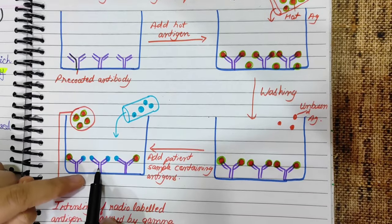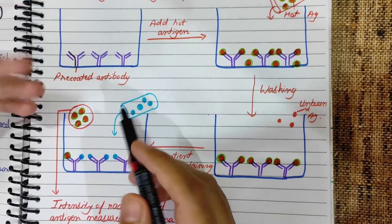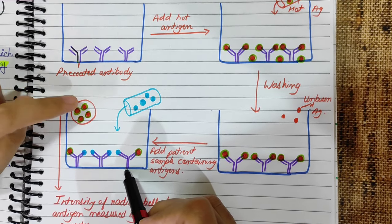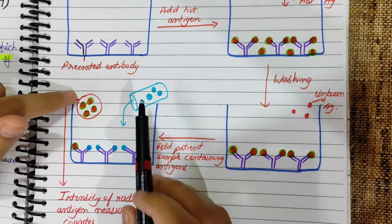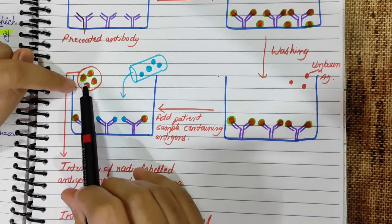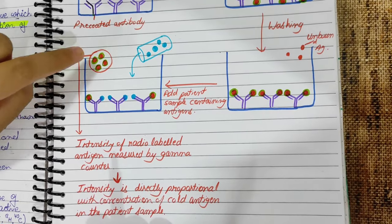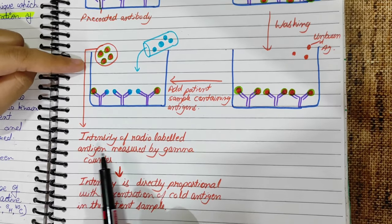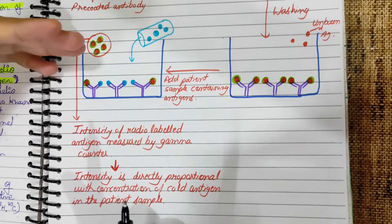There is competition. Both antigens compete for the antibody. The cold antigen has strong affinity, so it replaces the hot antigen. The amount of hot antigen released is radioactive material, and we can detect the gamma radiation using a gamma counter. So the intensity of radio-labeled antigen released is measured by gamma counter.